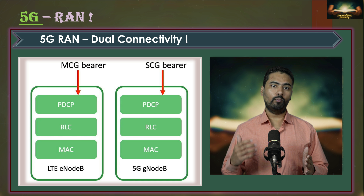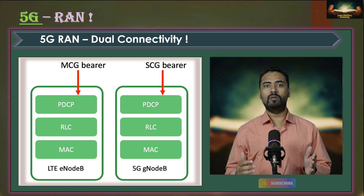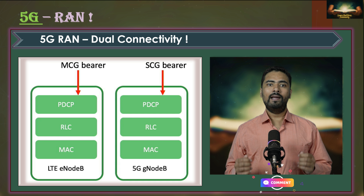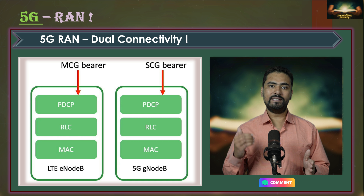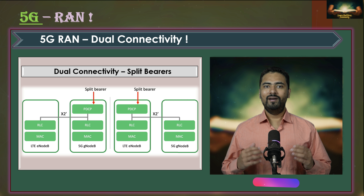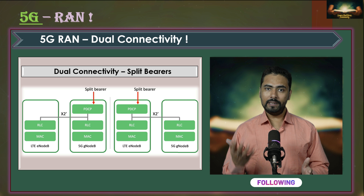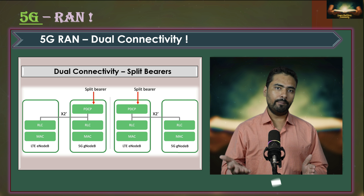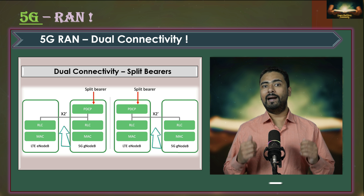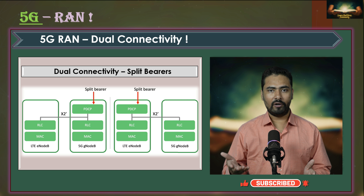If you look at the protocol stack you will notice two types of data bearers: the MCG bearer from the primary node and the SCG bearer from the secondary node. MCG stands for master cell group and SCG refers to the secondary cell group. Another important concept is the split bearer. In the case of a split bearer, one of the nodes forwards the data plane packets to the other node over the X2 interface, and the data is then combined at the PDCP layer before it reaches the core network.